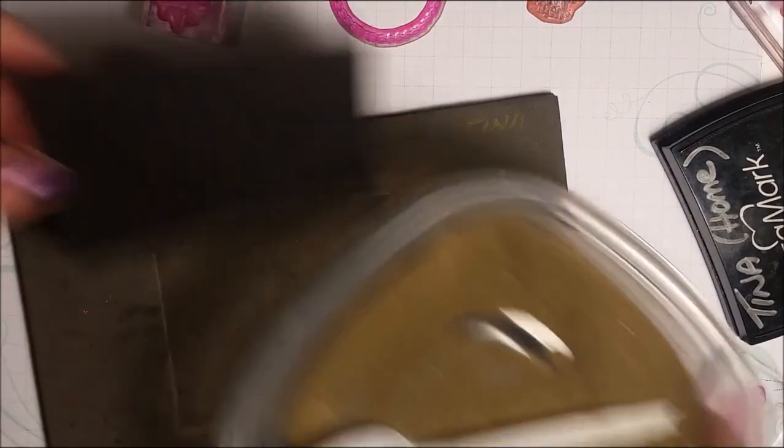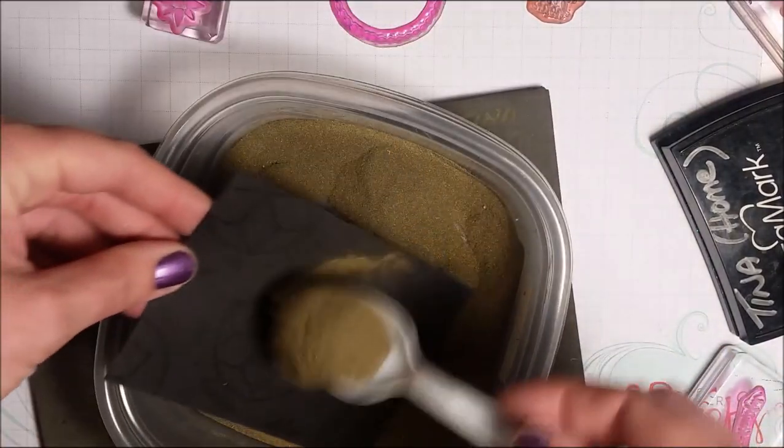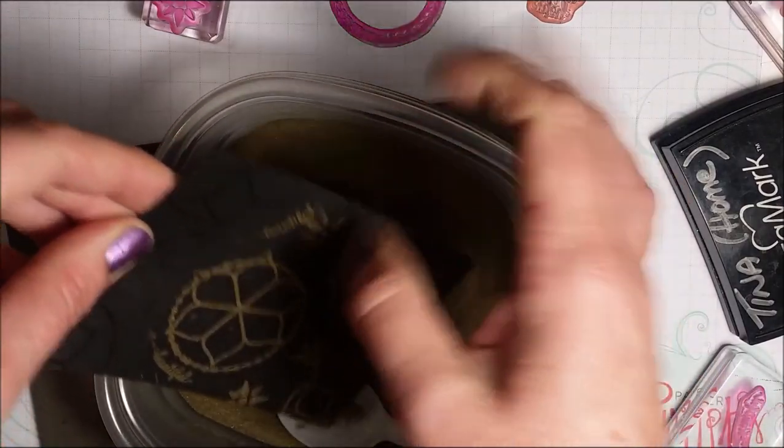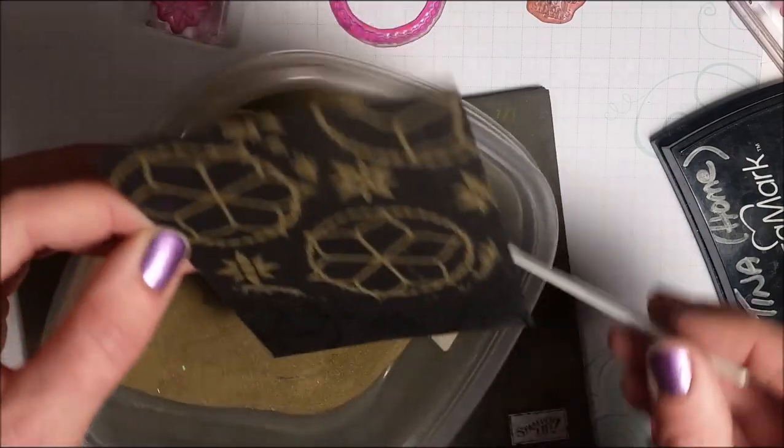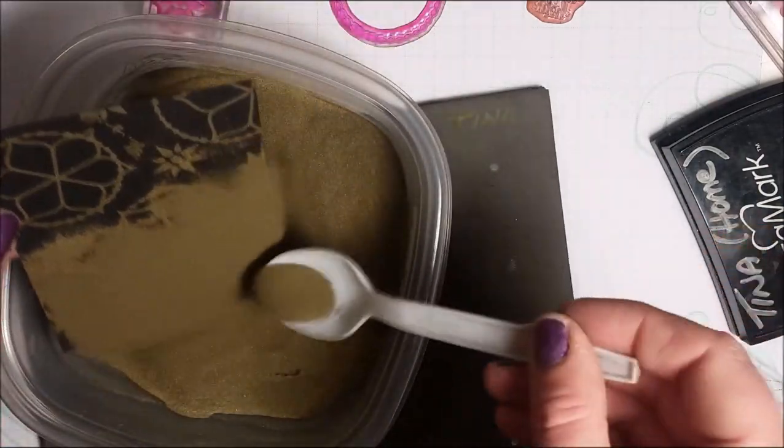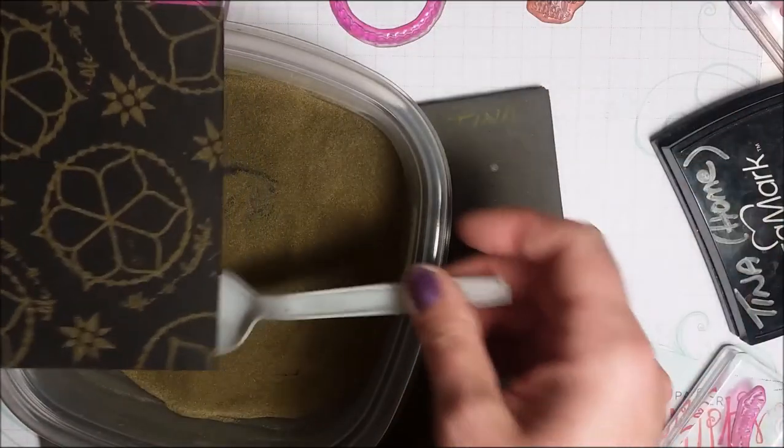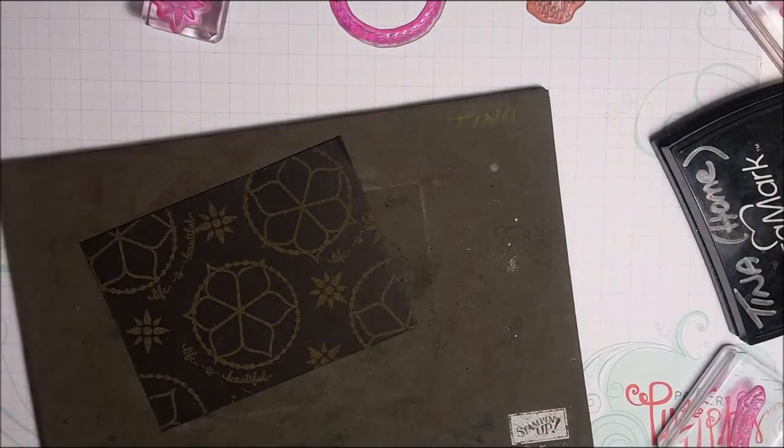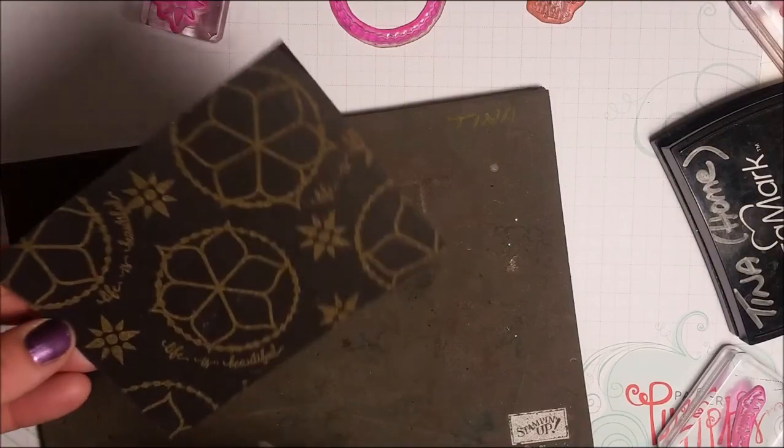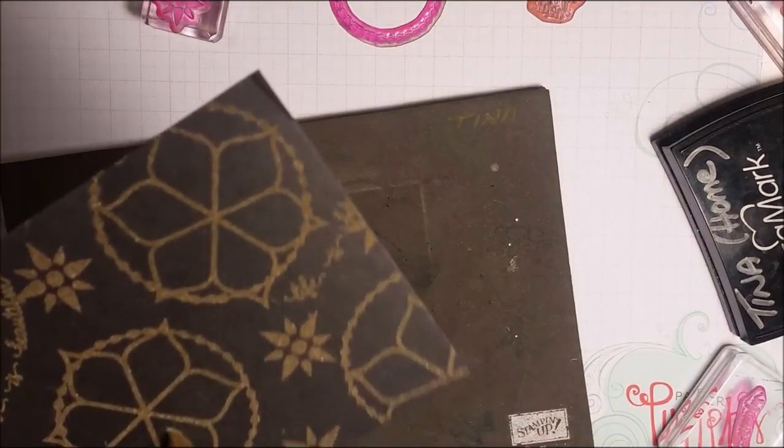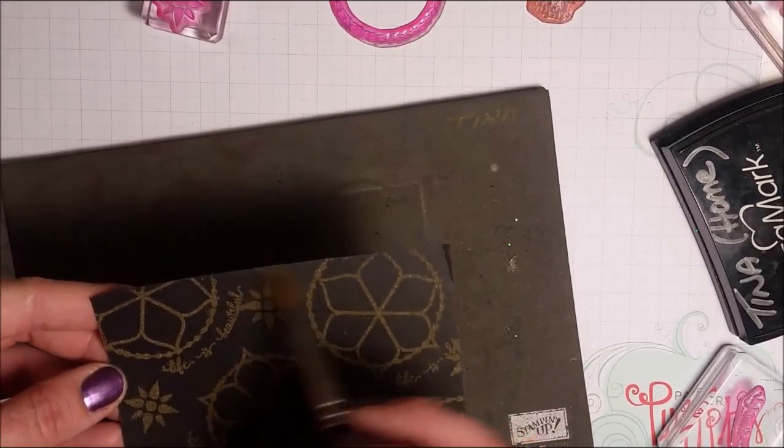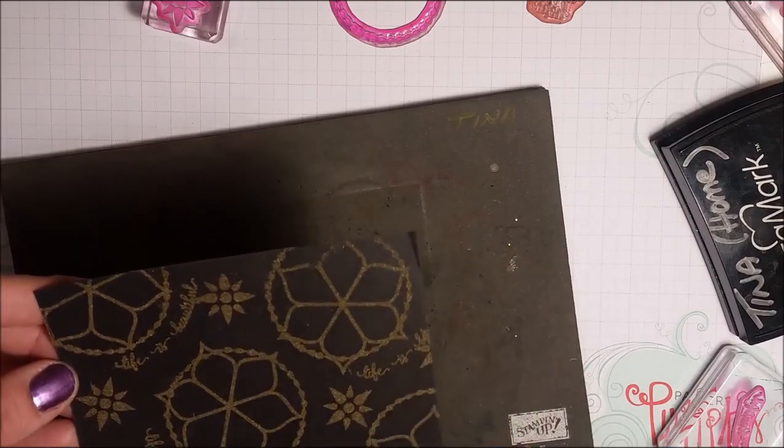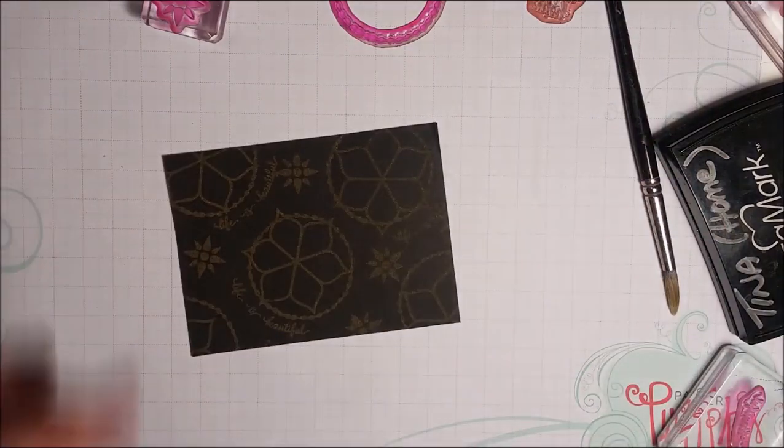Now my gold embossing powder. So if there's any gold powder where you don't want it, just grab a paintbrush and just wipe that excess powder away, pulling off as you go. I think that's good. Now it's time to heat set.